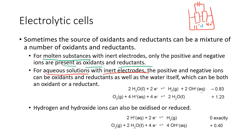In aqueous solution, water can act as an oxidant or reductant. In acidic conditions, water can either gain electrons to form hydrogen gas, or lose electrons to form oxygen gas. You can also oxidize or reduce acid ions, acids, and bases — OH⁻ and H⁺ can also react. When asked about electrolytic cells, you need to identify all of the oxidants and reductants and work out what's going to occur.